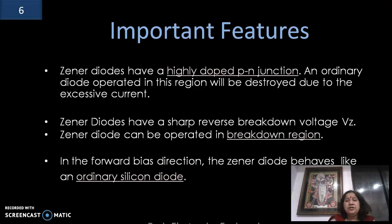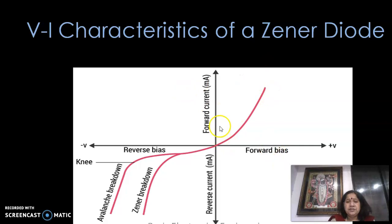Let's see the important features of a zener diode. A zener diode is very highly doped and it can be operated in the reverse breakdown region, whereas an ordinary diode will be destroyed. It has a sharp breakdown voltage Vz, and in the forward bias condition the zener diode behaves like a normal P-N junction diode.